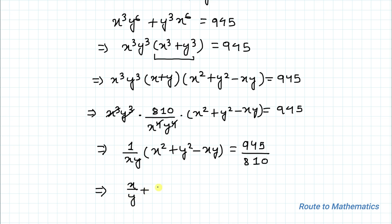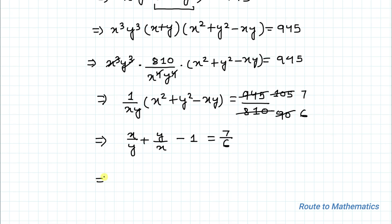This simplifies to (x² - xy + y²) / (xy) = 945/810. Dividing both by 9 gives 105/90, and dividing again by 15 gives 7/6. So the simplest form of 945 divided by 810 is 7/6.